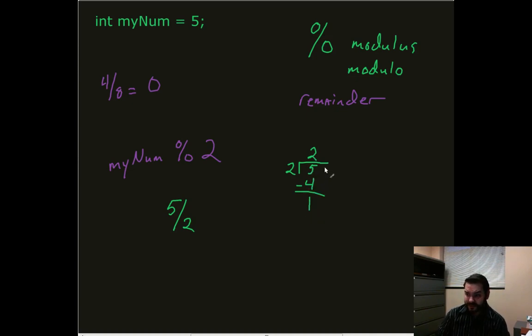Since there's nothing that I can knock down afterwards and 2 can't go into 1, in long division terms, this would be called remainder 1. So that's what I'm actually doing. By doing myNum modulo 2, what I actually get is 1.